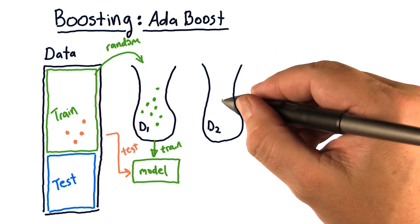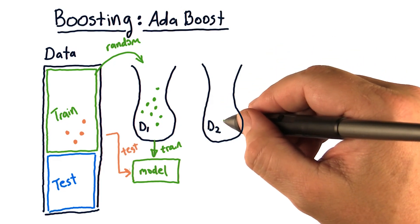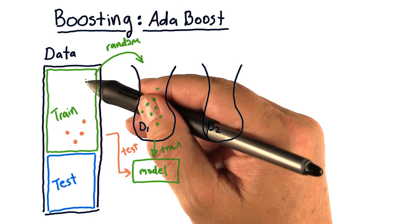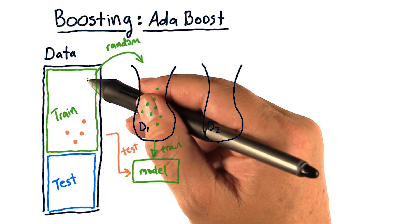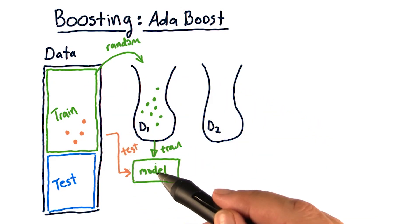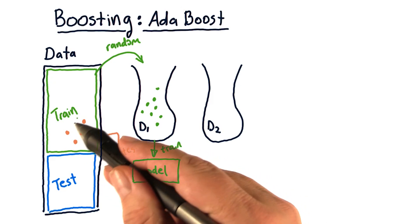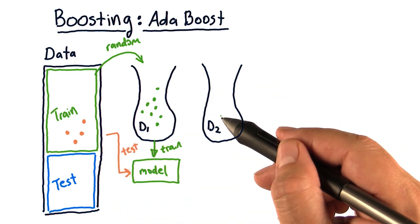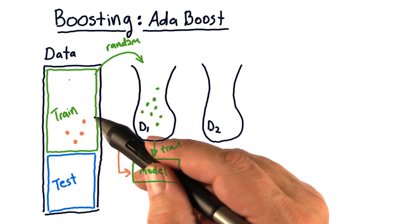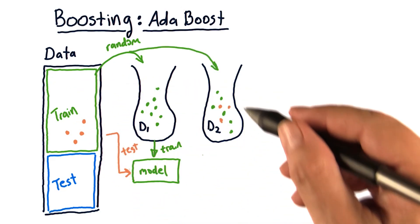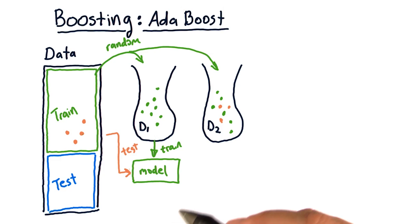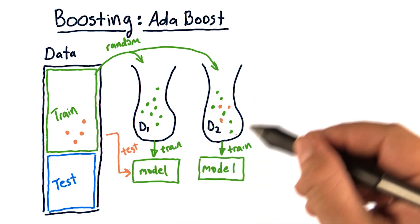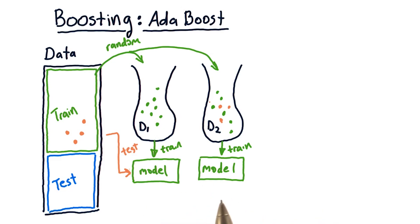When we go to build our next bag of data, again we choose randomly from our original data. But each instance is weighted according to this error. So these points that had significant error are more likely to get picked and go into this bag than any other individual instance. We ended up with a few of those points in here, and a smattering of all the other ones as well. We build a model from this data and then we test it.